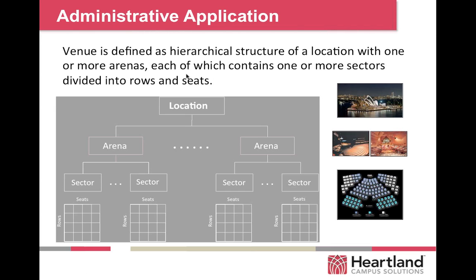A venue is defined as a hierarchical structure of a location with one or more arenas, each of which contains one or more sectors divided into rows and seats. Your location might be campus box office, then you might have your main theater and your basketball arena. You set up your sectors and which seats and rows are underneath those sectors — as shown in the seating chart example, different colors represent different sectors which would have different priority zones for pricing.